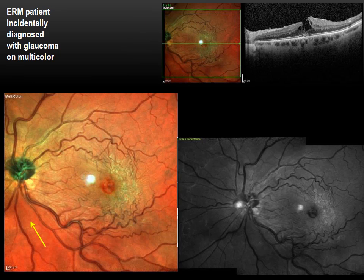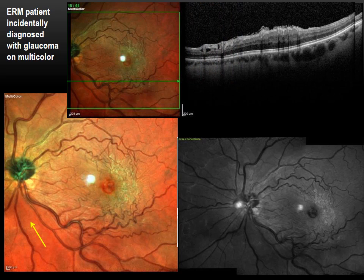This is another epiretinal membrane patient, again incidentally diagnosed with glaucoma on multicolor. This patient with an epiretinal membrane and a lamellar hole was being evaluated by a retina specialist when they noticed that the reflectance of the nerve fiber layer superiorly was different than the reflectance inferiorly. One can see this dark band inferiorly showing loss of nerve fiber layer thickness despite the absence of cupping in the optic nerve. A cross-section through that area reveals losses of the nerve fiber layer and ganglion cells in the region below the surface — losses we would not have known to look for had we not seen the multicolor image.